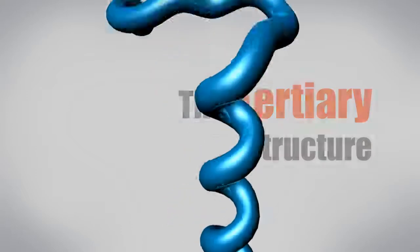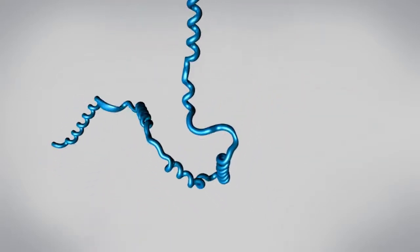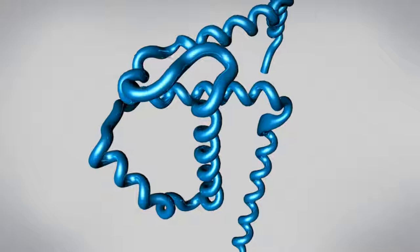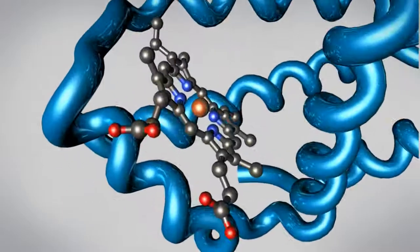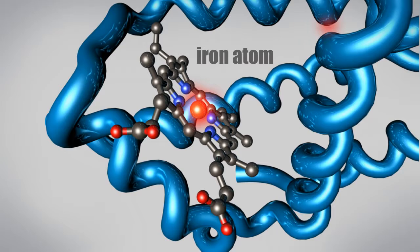Many proteins fold into a compact globular shape, with hydrophobic side chains sheltered inside away from the surrounding water. The functions of many proteins rely on this folded structure. For instance, hemoglobin forms a pocket to hold heme, a small molecule with an iron atom in the center that binds oxygen.